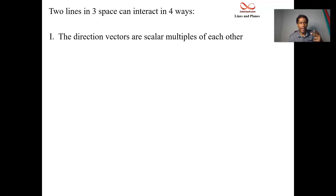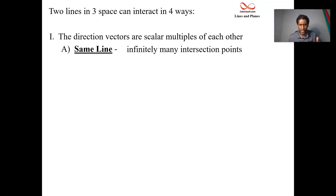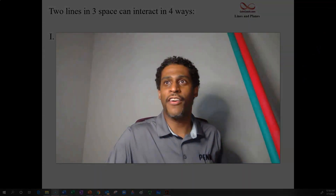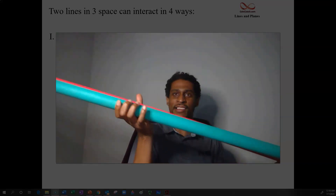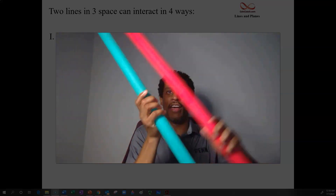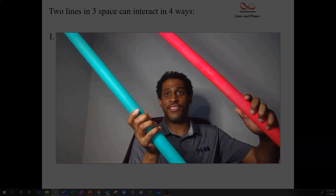If you have direction vectors that are scalar multiples of each other, you can have one of two different situations. They could be exactly the same line, just like in 2D — that's where you have infinitely many intersection points. Or they could be parallel lines, where there are no intersection points.